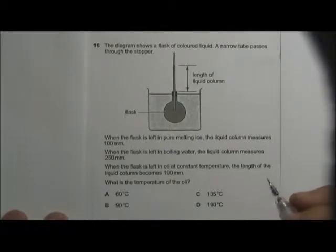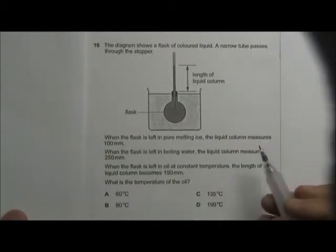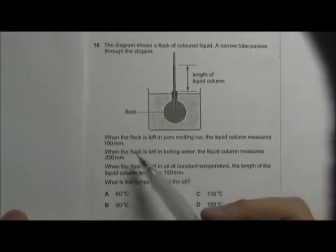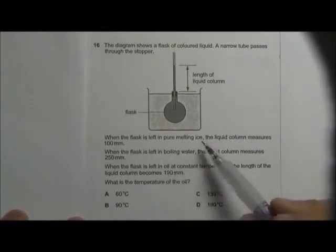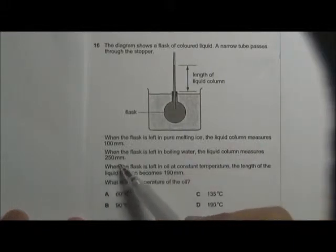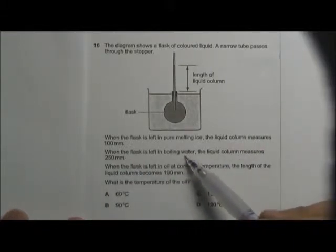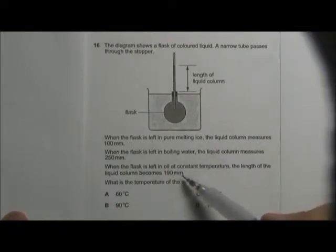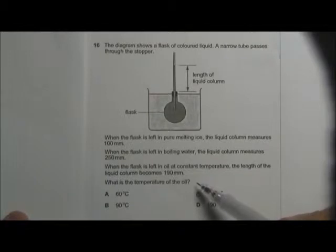In this question we have a liquid in glass thermometer. The liquid column measures 100 mm when the temperature is 0 degrees Celsius and the liquid column goes up to 250 mm when it's left in 100 degrees Celsius. When the liquid column becomes 190 mm, what is the temperature? We can write out the relationship.